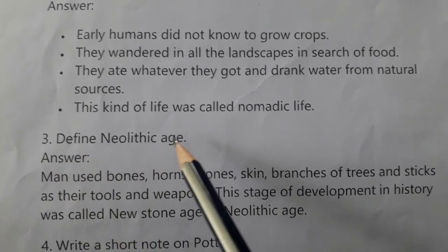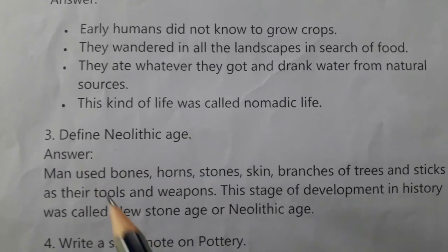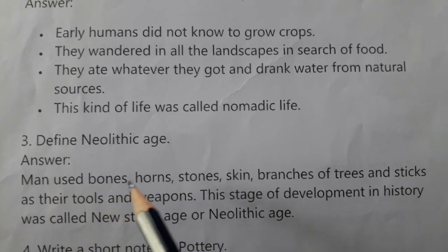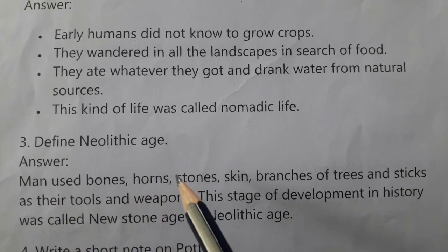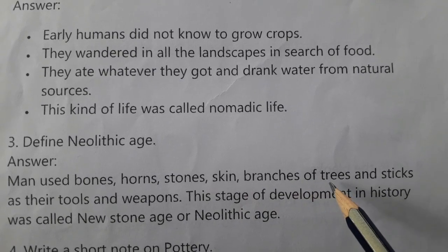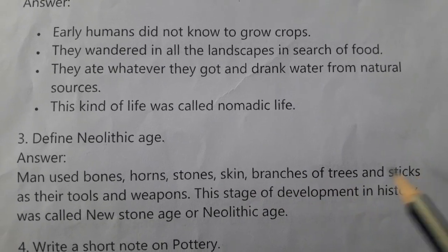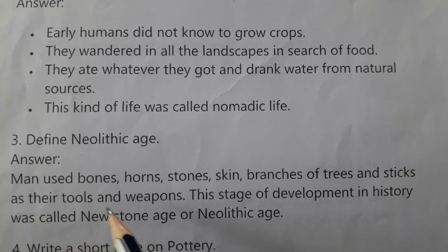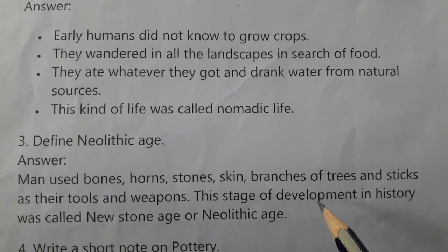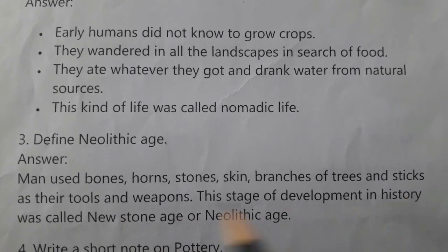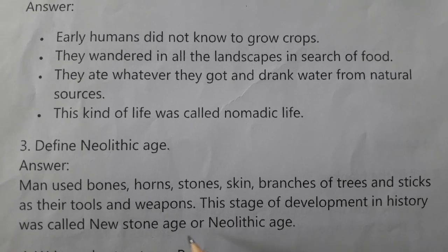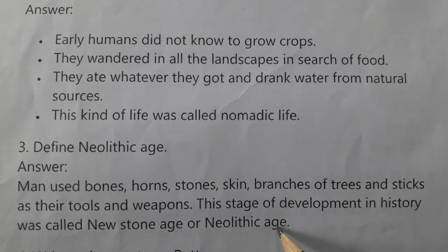Third question: Define Neolithic age. Answer: Man used bones, horns, stones, skin, branches of trees and sticks as their tools and weapons. This stage of development in history was called the new stone age or Neolithic age.